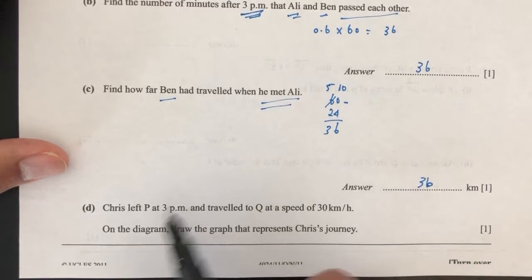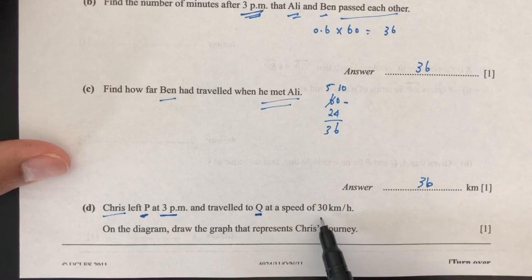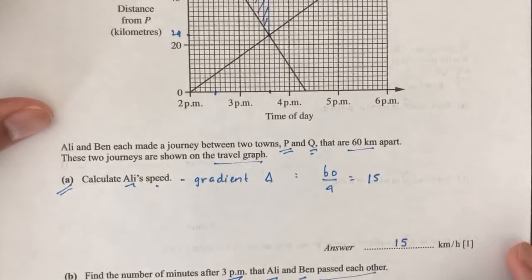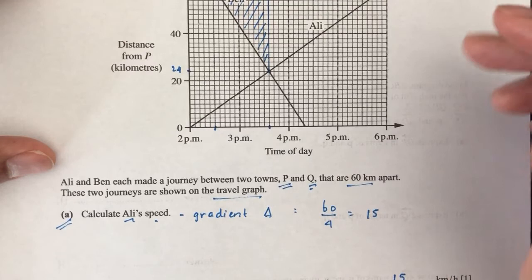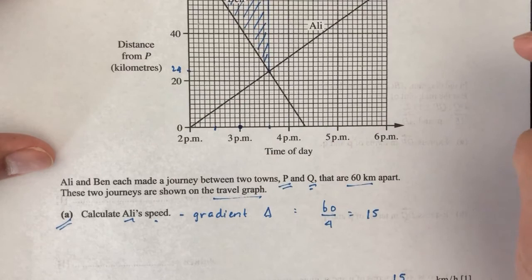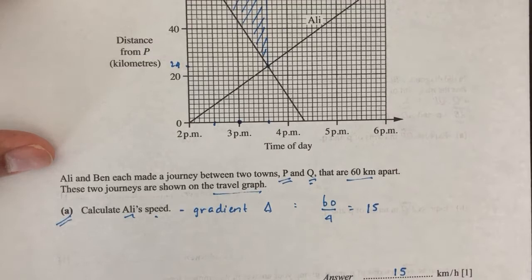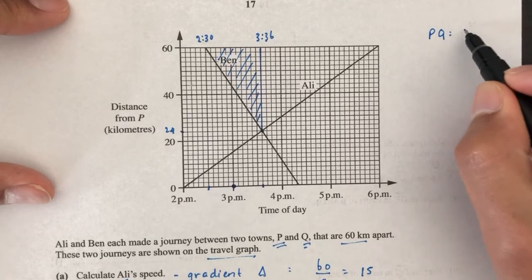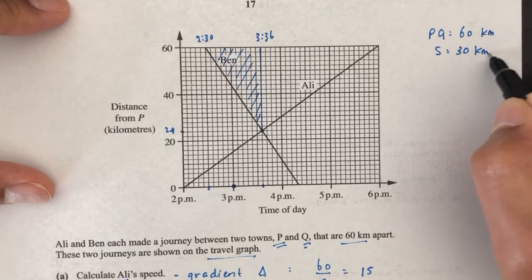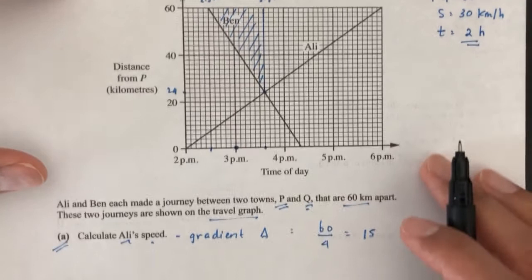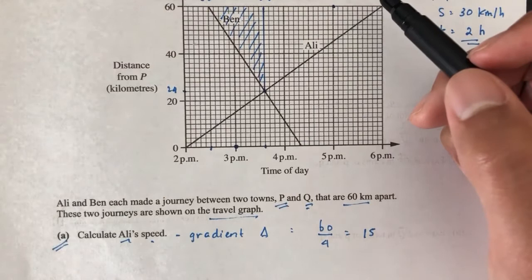For part D, Chris left P at 3 p.m. and traveled to Q at 30 km per hour. Since P to Q is 60 km, at 30 km/h he will take 2 hours, arriving at 5 p.m. So the graph for Chris is a straight line from P at 3 p.m. to Q at 5 p.m.